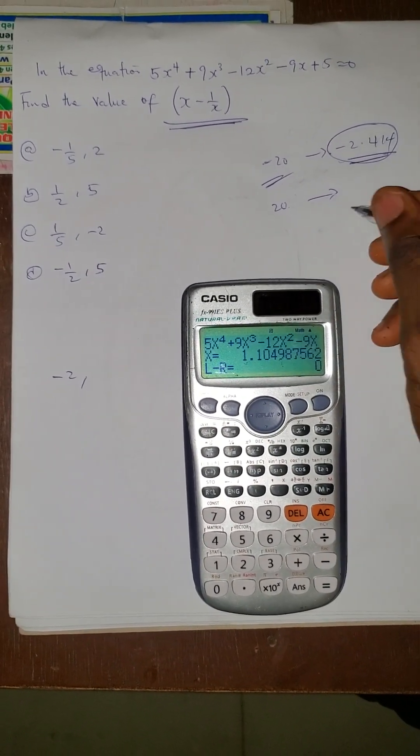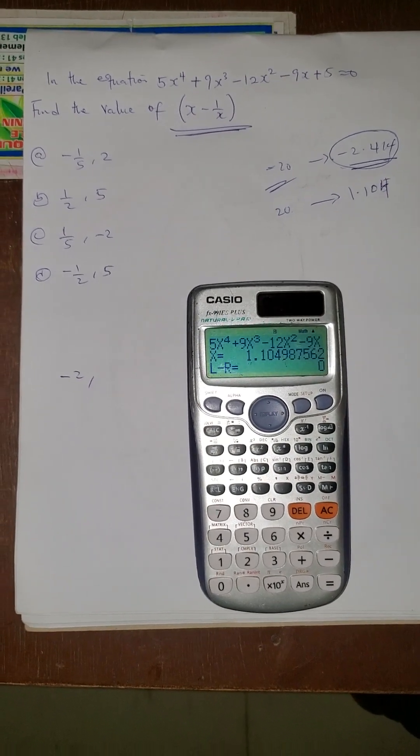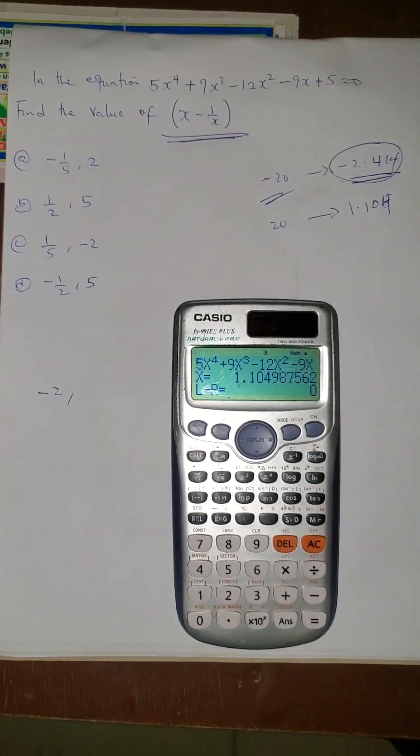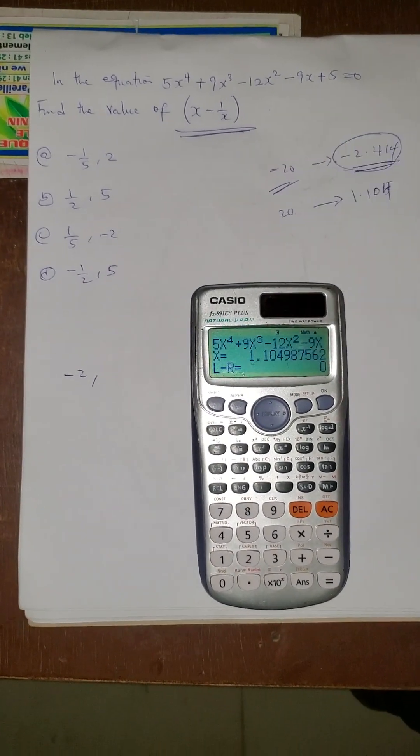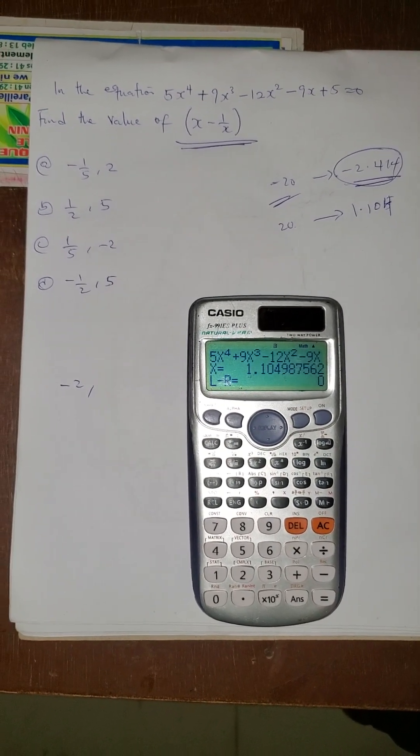Now see, when I use positive 20, it gave me the value to be 1.104 something. So that is the essence of the value input. It changed. It serves as a limit, so it changed the value of x provided x falls to that limit.